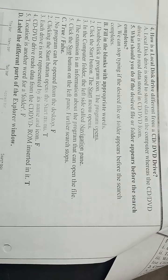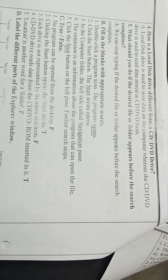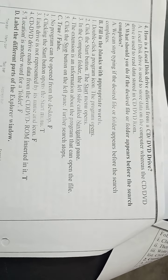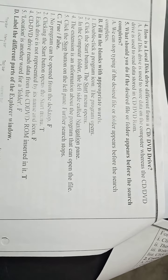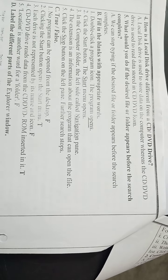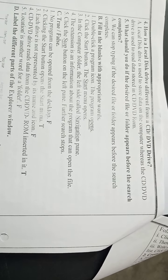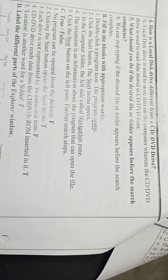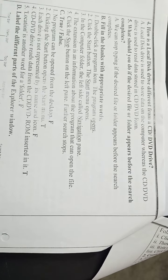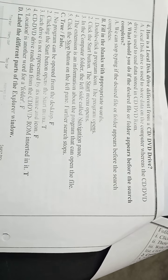Number 3: in the computer folder, the left side is called navigation pane — this is your blank. Number 4: the extension is an information about the program that can open the file — the extension is your blank. Number 5: click the dash button on the left pane — further search stops. Click the stop button.